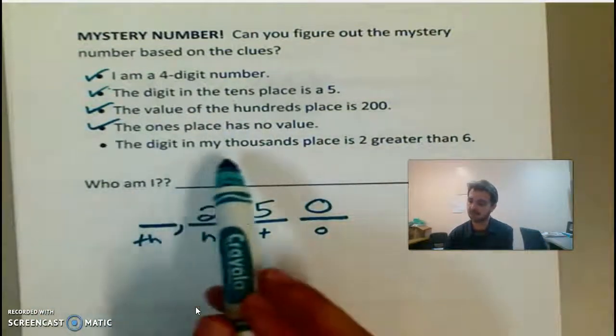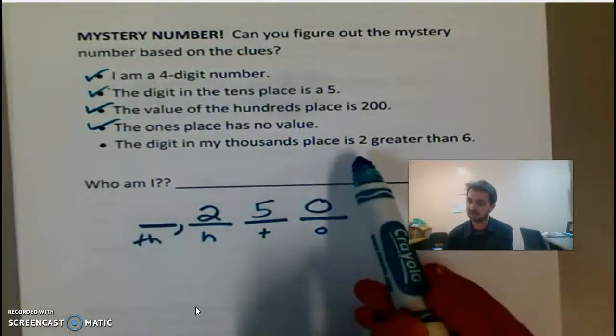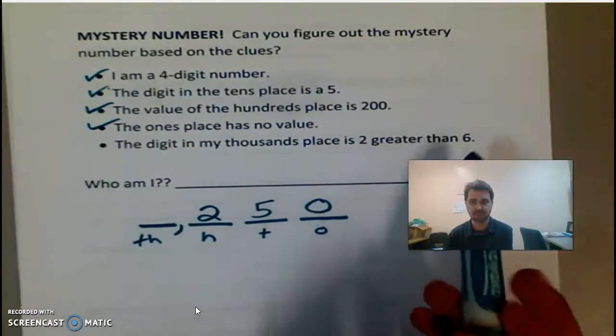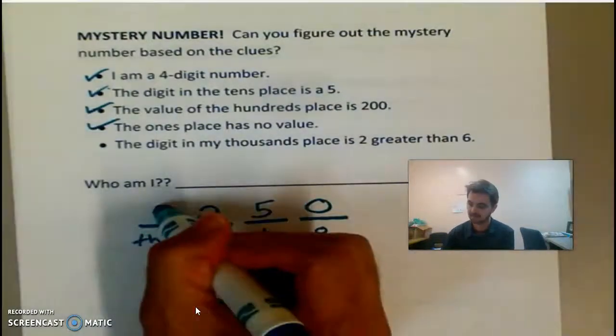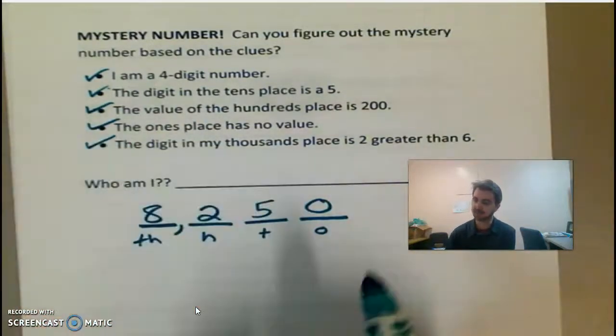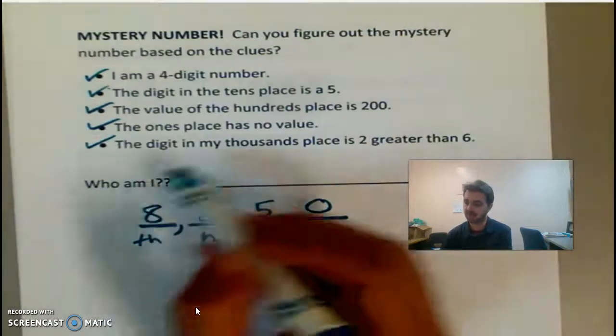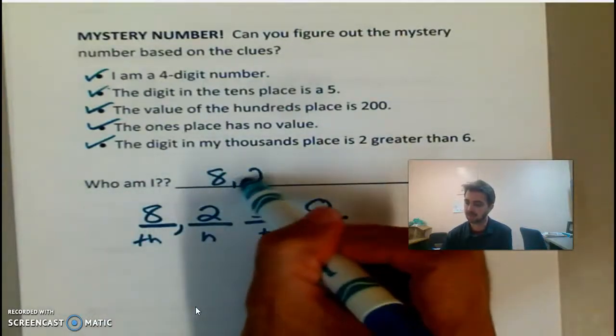And my last clue, the digit in my thousands place is two greater than six. So what is two greater than six? Eight. All right, so I've done all my clues, and my mystery number is, who am I? I am 8,250.